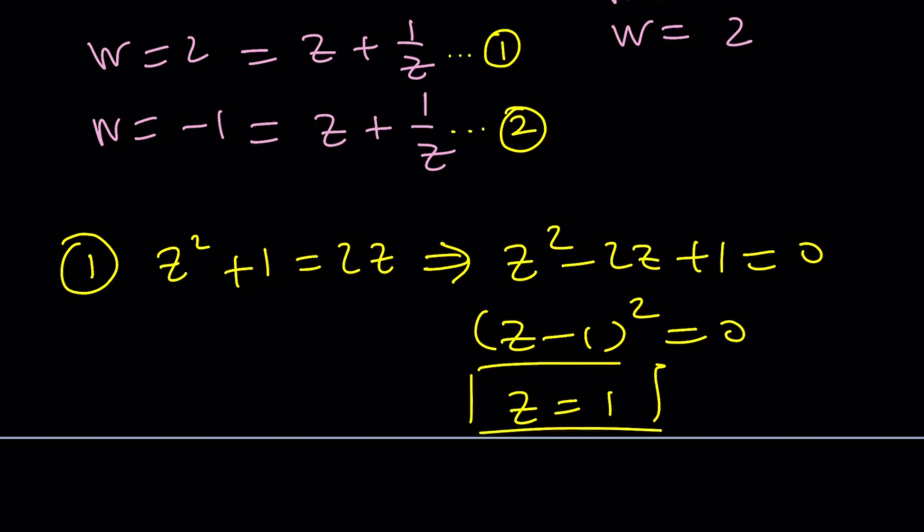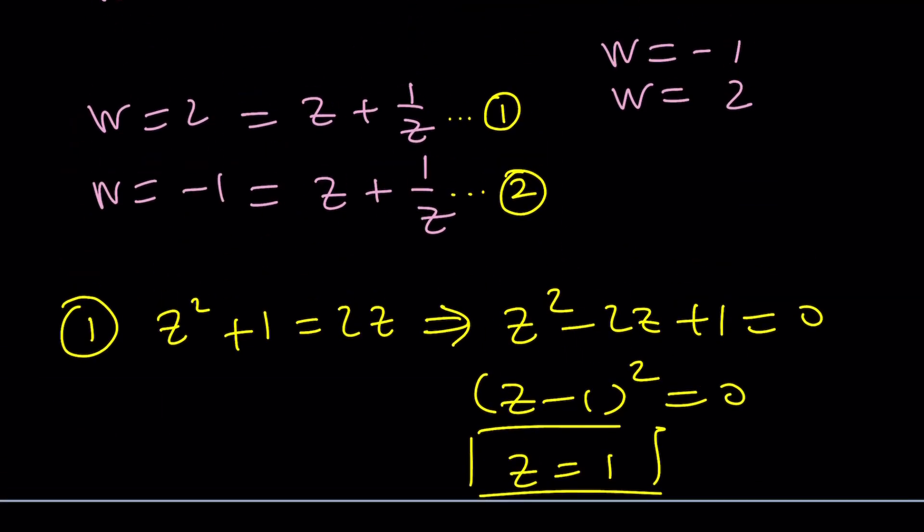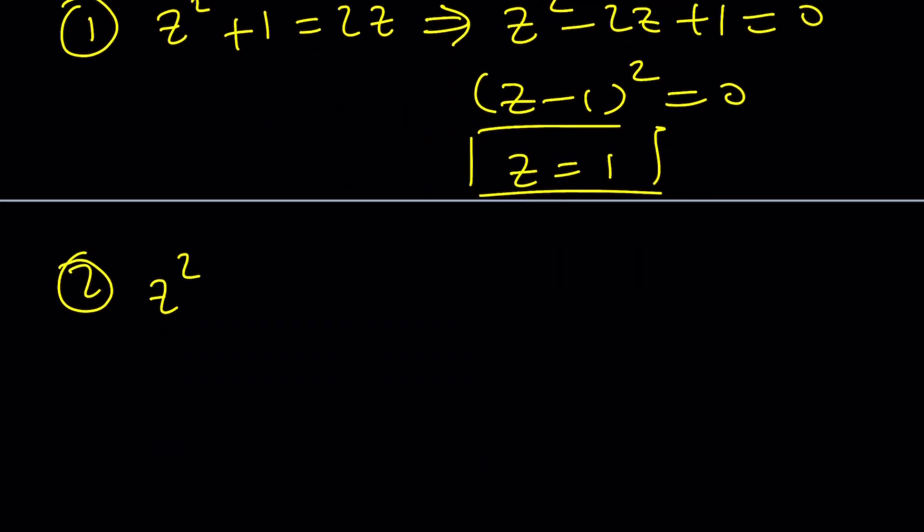2 wasn't a double root, but now 1 is a double root. So z equals 1 is a solution. From here, we're looking for z, remember? And number 2 is when we set the z plus 1 over z equal to negative 1. If you multiply everything by z, you get z squared plus 1 equals negative z. And from here, you get z squared plus z plus 1 equals 0. Does that look familiar?